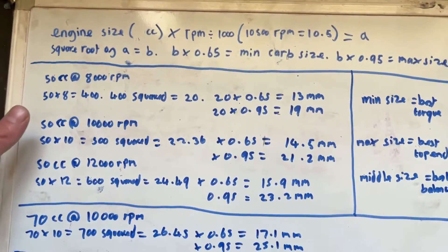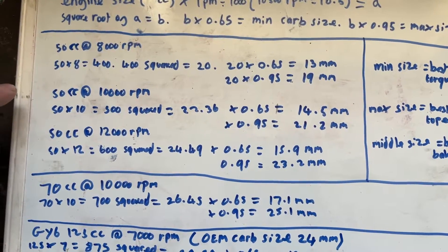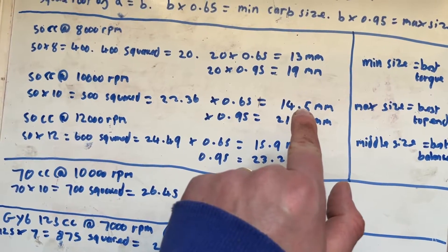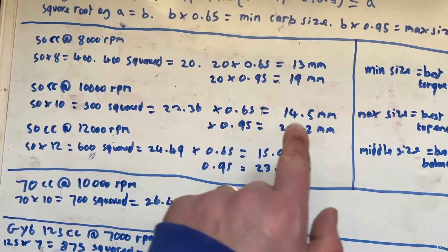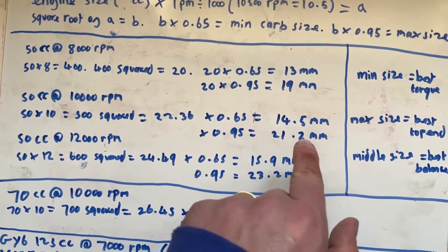So again, if we move down, we've got a 50cc at 10,000 RPM, so this is a bit more tuned. So again, we do the calculation again, we find that the minimum carb size to run at 10,000 RPM with the same engine size is 14.5 and the maximum is 21.2.